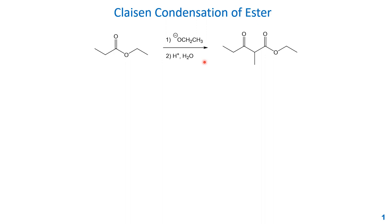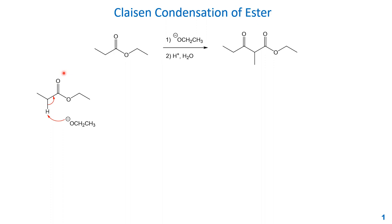The second step, we always need to work up with acidic water. The base here we choose ethoxide because this is an ethyl ester. If we have a methyl ester we should use methoxide, or we can use LDA as a base. Looking at the mechanism, the first step is the alpha proton of this ester will be deprotonated by the base, the ethoxide. The ethoxide oxygen takes the proton and pushes the sigma electron back to form a pi bond, breaking the pi bond and pushing the electron to oxygen. This first step of deprotonation gives you the enolate as an intermediate.